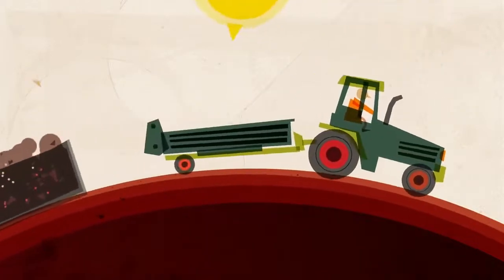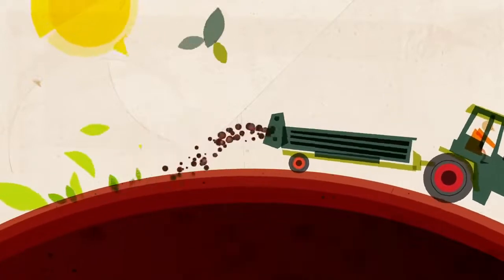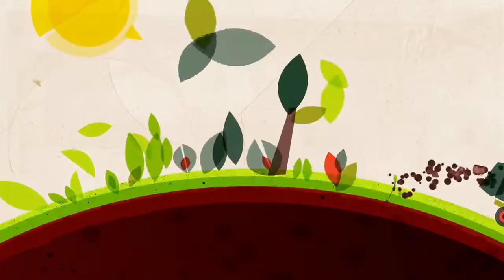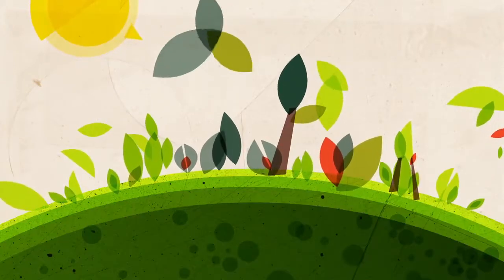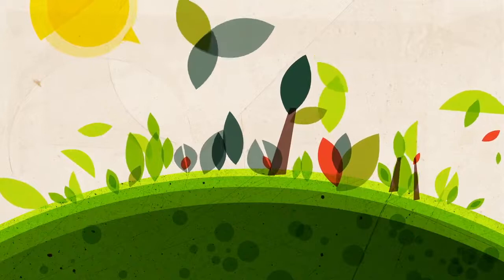This humus is called terra preta, black soil. For high safety and to get rid of remaining micropollutants, this soil is used for non-food purposes only for the first ten years.